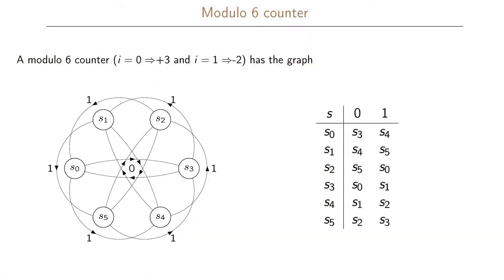In this example we're going to look at the modulo 6 counter and see how the state assignment will affect the number of implicants when we realize the counter. The modulo 6 counter is defined with six different states s0 to s5, each representing the equivalence classes for modulo 6. If we have a 0 as an input we will add 3 modulo 6, and if we have a 1 as an input we will subtract 2 modulo 6. Here we also have the graph for the modulo 6 counter.